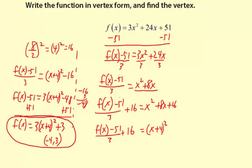Then once we found that number for the trinomial, we added to both sides, wrote it as a perfect square binomial, and then simplified the left-hand side. And as we did that, we put the function in vertex form, and the vertex is negative 4, 3.